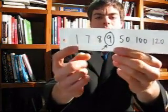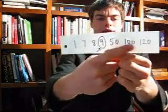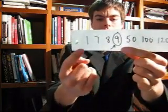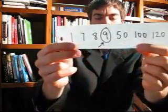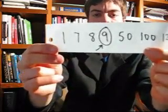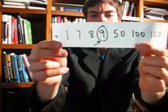So the median is: 1, 2, 3, 4, 5, 6, 7. The middle is this one — 9. So the median age of our customers is 9 years old.